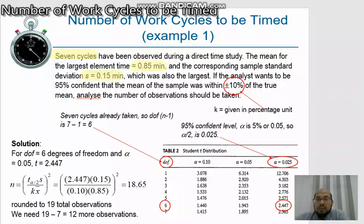We go back to this formula. Again, there are four parameters that we have to figure out. First given is the standard deviation 0.15. And the second parameter is the average observed time, which is 0.85.